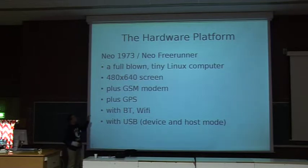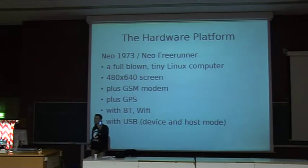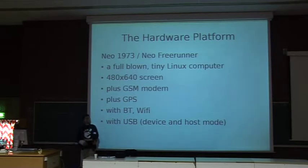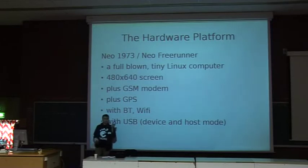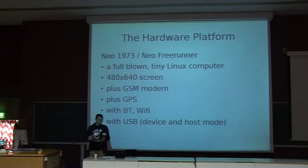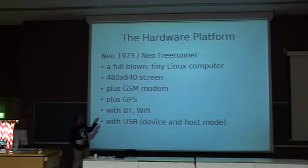The hardware platform: the first edition of the phone is called the Neo 1973, which is now out of stock. The next edition is called the Neo FreeRunner, hopefully coming to sale around April. The really important thing is: don't look at it like a phone — look at it as a complete mobile Linux computer in a tiny form factor. It has 120 megabytes of RAM and a 480×640 screen.